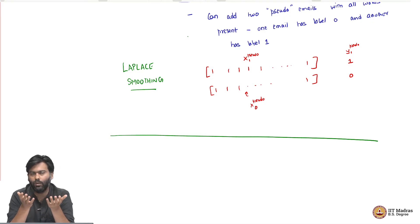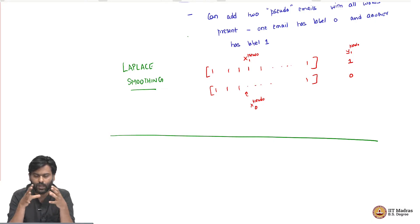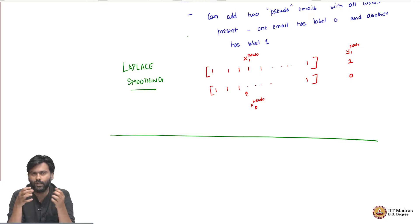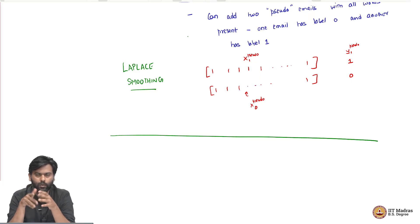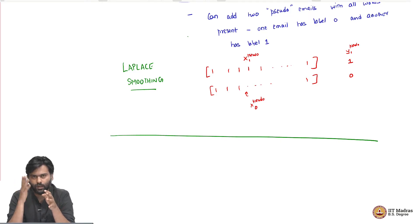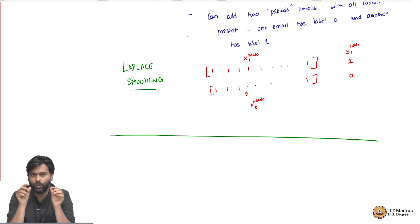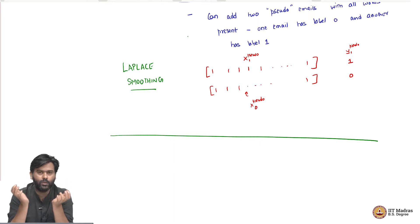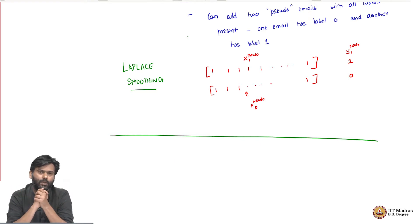How does the decision boundary look like? For k-nearest neighbors, as k increased, when k was small there were lots of holes and then as k increased it kind of smoothed out. Similarly, for decision tree you are cutting the feature space using lines parallel to the axis, which corresponded to the questions we were asking. So now one should also ask the same question here: what is the decision function that Naive Bayes gives us?